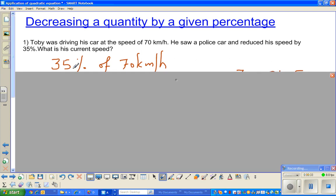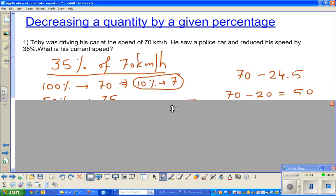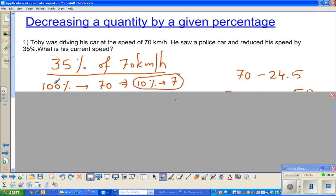The first thing that we want to find is 35% of 70 km per hour. Let me go over this one by one. The first thing that you should know is 100% of 70 would be 70. If 100% is 70, 10% is 7, because 10% is one tenth of 100%. We're going to use this later.